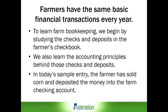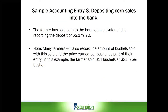In today's sample entry, the farmer has sold corn and deposited the money into the farm checking account. The farmer deposited $2,179.70 into the bank after selling corn to the local grain elevator. Note that many farmers would also want this entry to record that they sold 614 bushels of corn for $3.55 per bushel on the bank deposit.